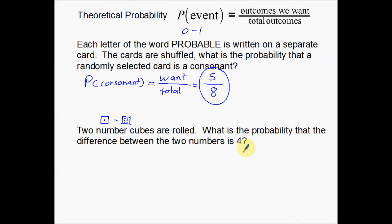This one is going to involve just a little bit more math, so this is a little bit more difficult. The notation stays basically the same. Probability of rolling two number cubes, the difference between the two numbers is 4. I'm looking for a difference of 4. In this case, what numbers give me a difference of 4?